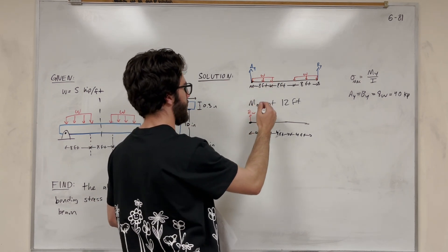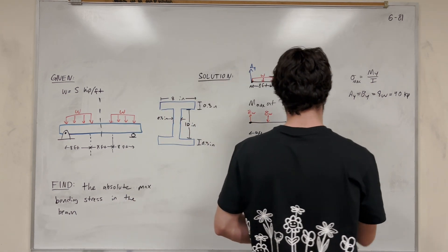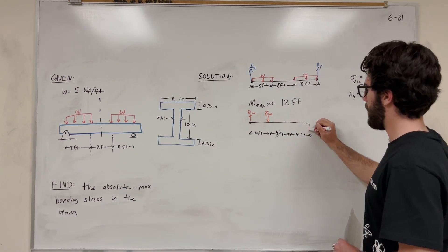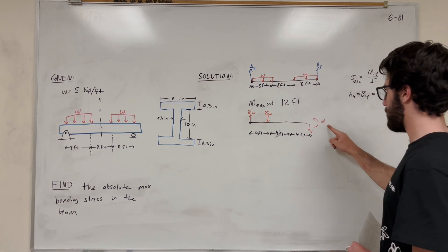And then this distributed load here is pushing downward. And that's 4 feet in, right? Because it's 8 feet, 8 feet. And its magnitude is 8w. Cool. So then we go all the way to our end of our beam. We're going to have our shear stress. And we're going to have our moment. And so this moment is what we're trying to find.